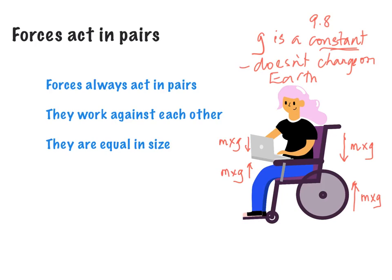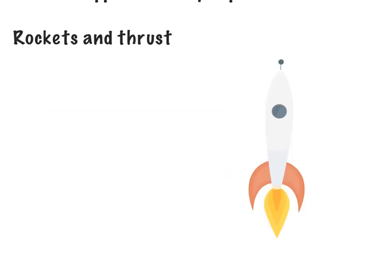So we've got push and push back: the girl is pushing down on the chair and the chair is pushing back up; the laptop is pushing down on her and she is pushing back up. Because there is no movement in either situation — she is not moving relative to the chair, and the laptop is not moving relative to her — we can say those forces are balanced: equal and opposite. Notice they are going in opposite directions, which we show using arrows in our force diagrams.